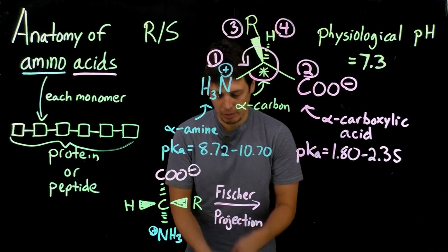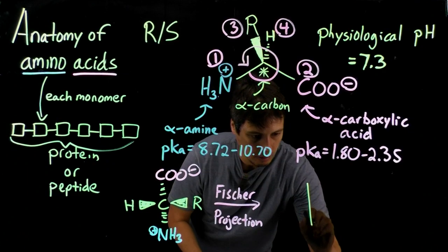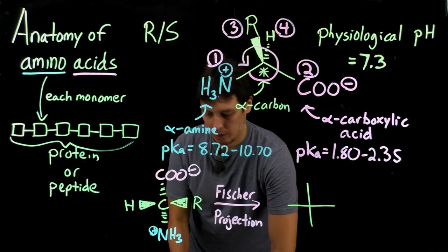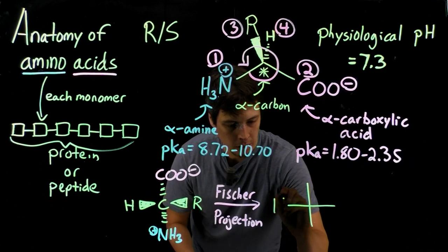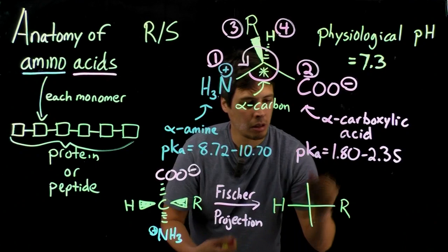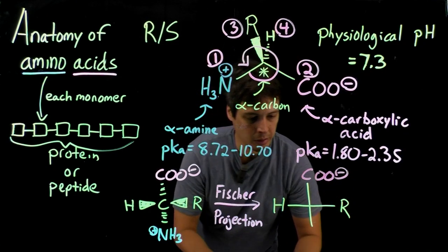So what you end up is something that looks like this, where we have the hydrogen, R, carboxylate, and NH3.